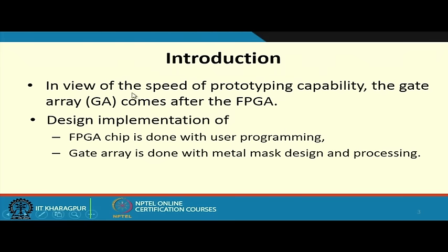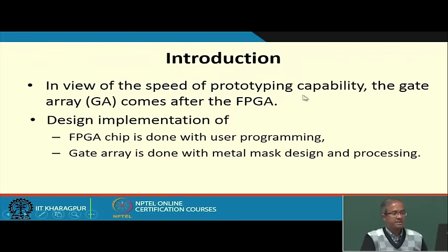The second technology, called gate arrays or GA, will be a little less flexible than FPGA, but its speed will be a little higher. These are all design performance trade-offs. In terms of the speed of prototyping, gate array comes after FPGA in the sense that it is slightly slower.